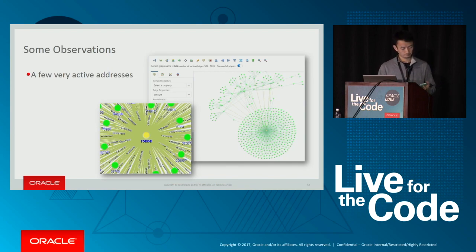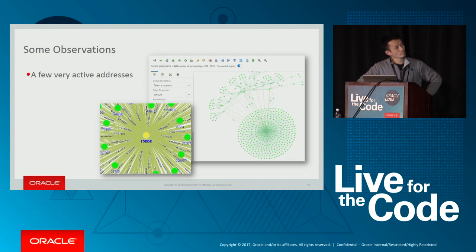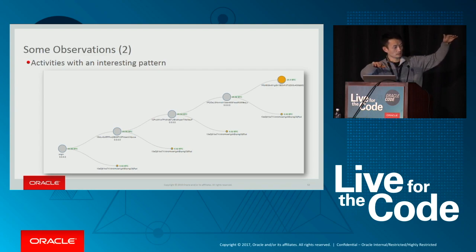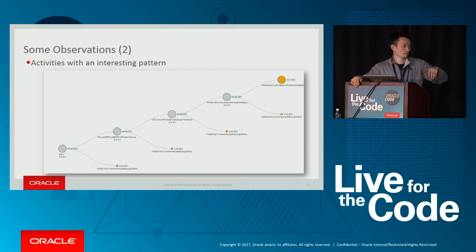Some observations: there are very active addresses — if you zoom in, there's a lot of Bitcoins flowing into that address. You also notice clusters on the right-hand side. I also noticed a very interesting pattern: from one address to another, with a small Bitcoin flow of 0.02 Bitcoin, and it keeps repeating — another 0.02 Bitcoin to a Bitcoin address, over and over. It feels like somebody is doing testing of Bitcoin transactions.